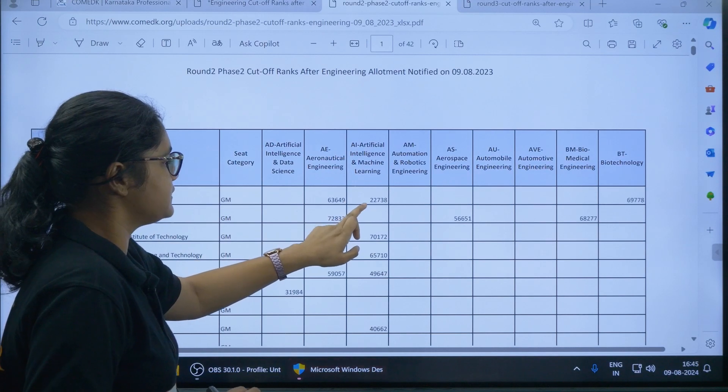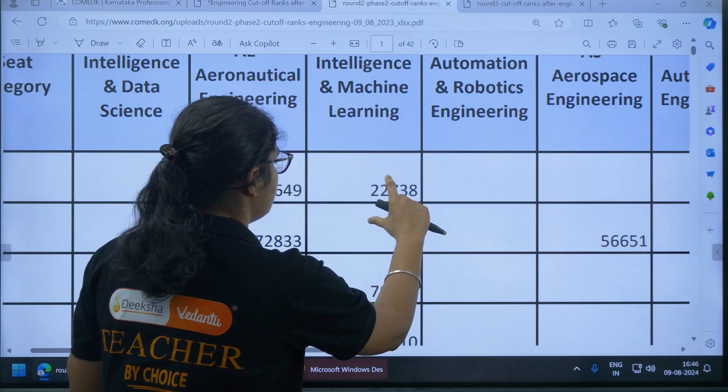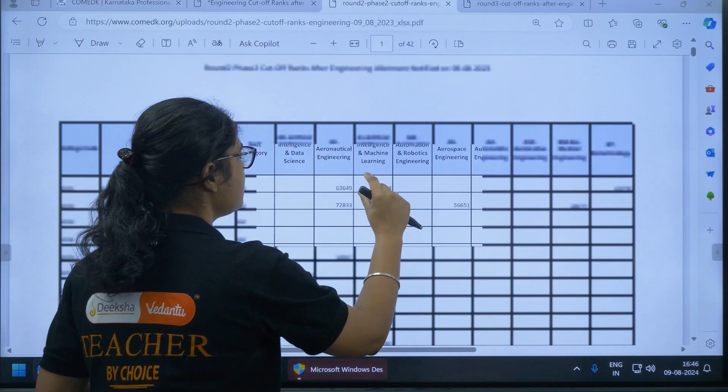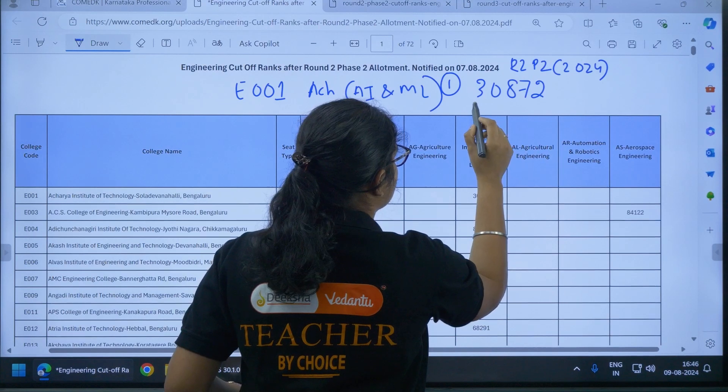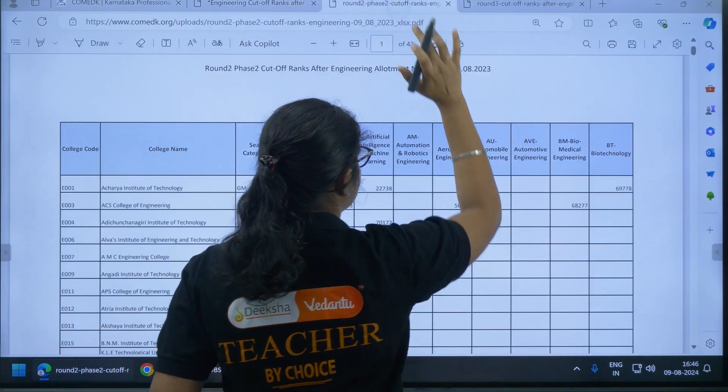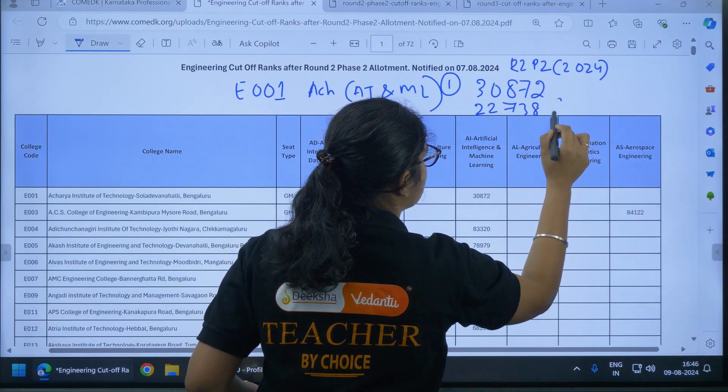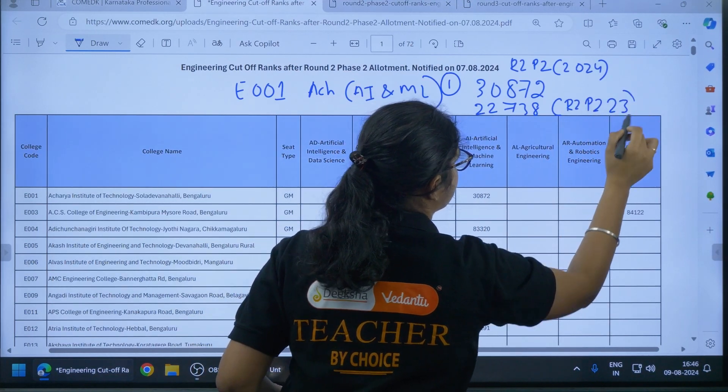Artificial Intelligence and Machine Learning, that is 22,738. If it is not visible, you can see 22,738. So I will note down this one also here. The value is 22,738. This is the Round 2 Phase 2 2023 cutoff.